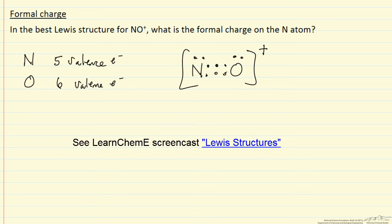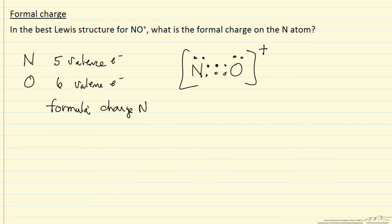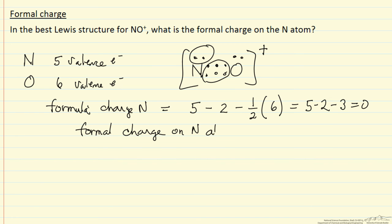Now, once we have this structure we can determine the formal charge, so let's do this for nitrogen. The formal charge is the number of valence electrons in the atom, in this case 5, minus the number of lone pair electrons, namely these two electrons, 2, minus one half the number of shared electrons, 6. So 5 minus 2 minus 3 is 0. So the formal charge on the nitrogen atom is 0.